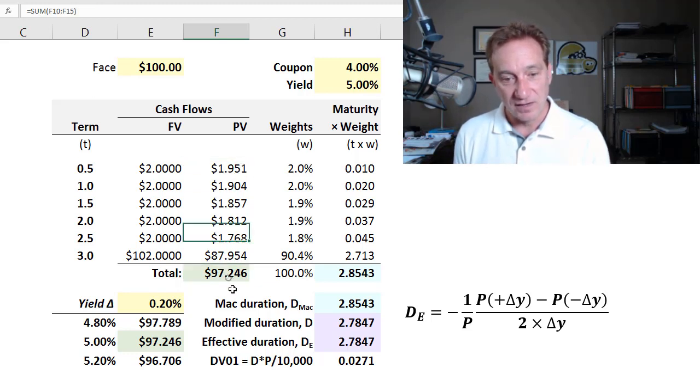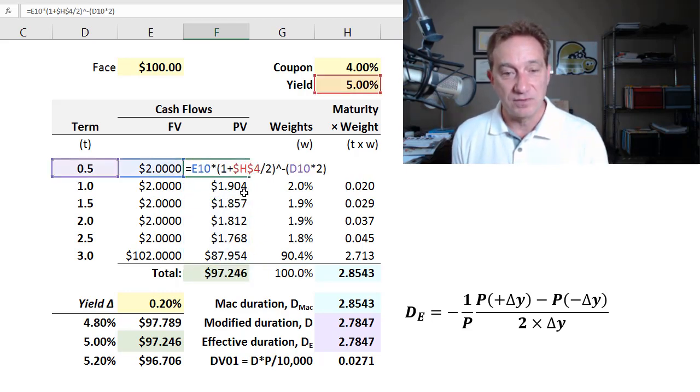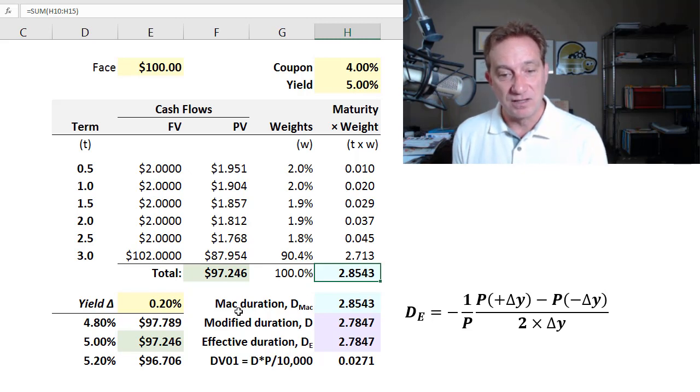So here, this 97.25 is the sum of the present value cash flow stream. Each present value cash flow is simply the future cash flow discounted. You can see here in this case with semi-annual compound frequency. So we have the bond's price. And then first here, I just compute the Macaulay duration, which has a simple definition.